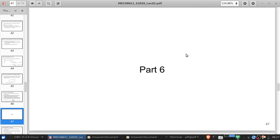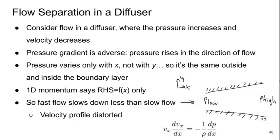Welcome to Part 6 of Lecture 2 of Bluff-Body Aerodynamics. Now let's close out our discussion on flow separation in a diffuser. The pressure gradient is adverse. The pressure is rising in the direction of flow.